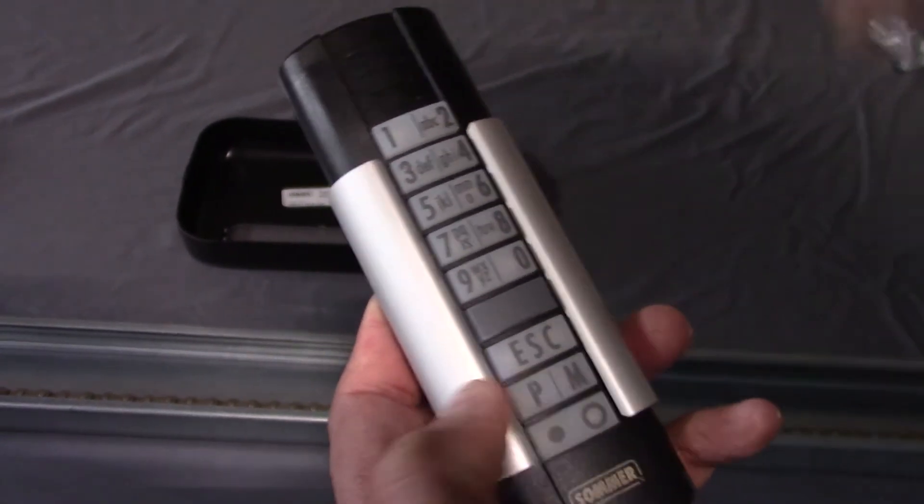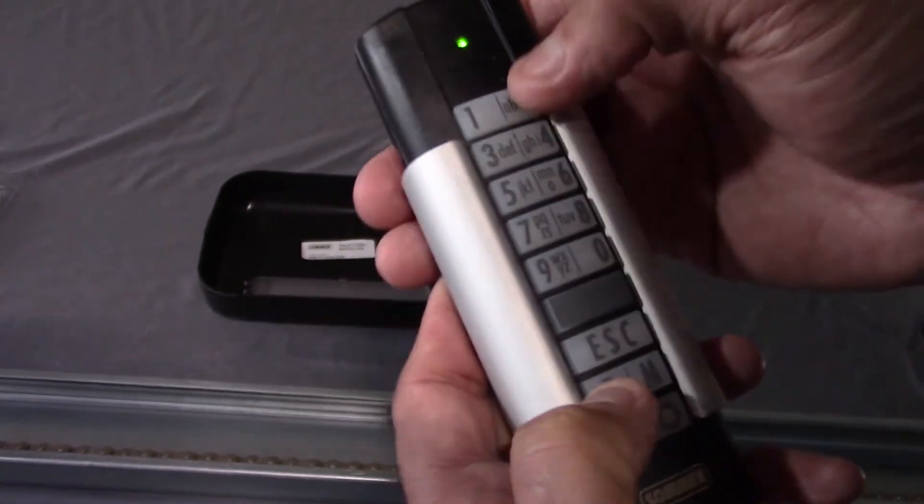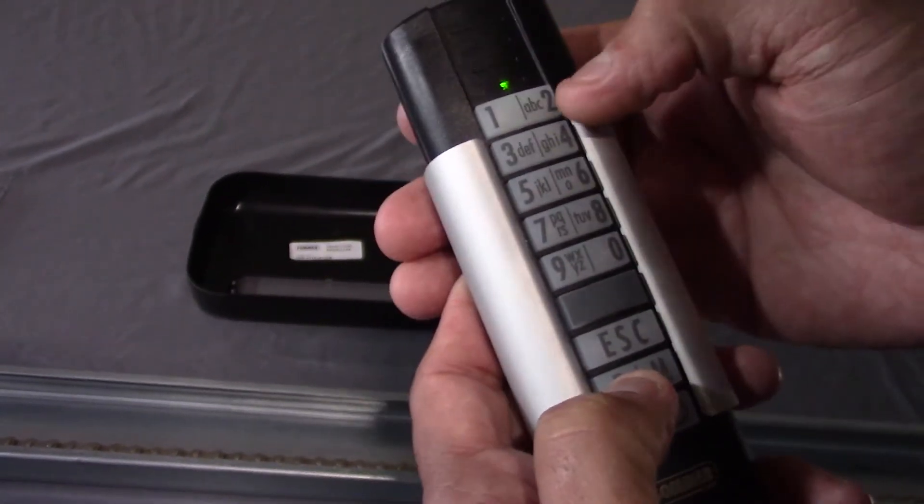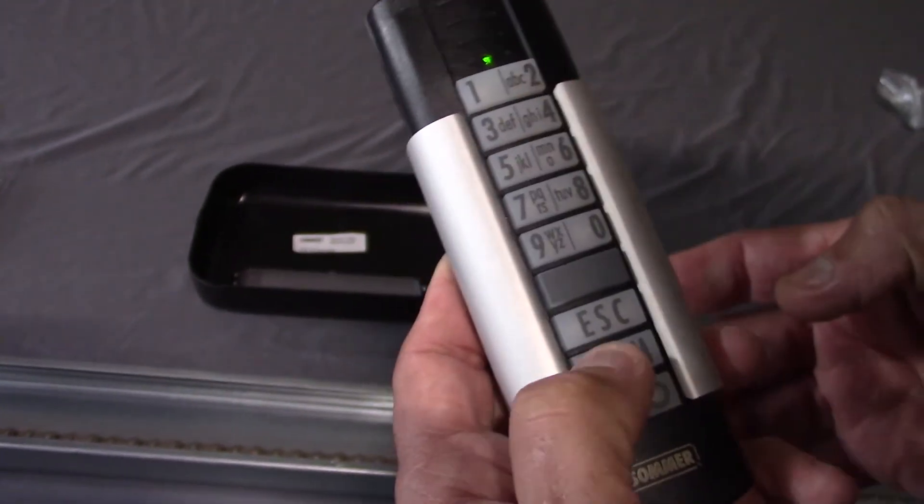So for a second door, I would press P again, then the number two, then P again, and enter 2345 and P.